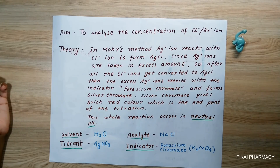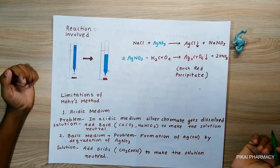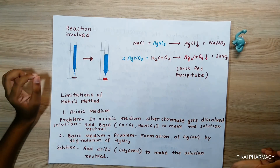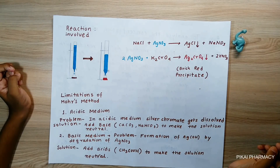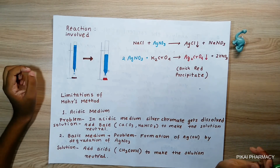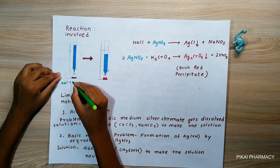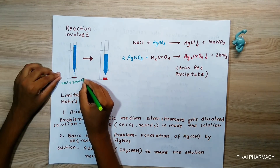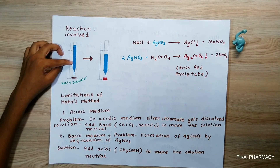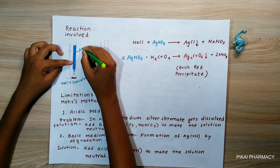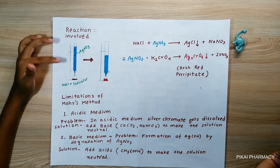Now let's understand the reactions involved in this Mohr method of precipitation titration. I have drawn a burette and a conical flask to help explain the reactions. The conical flask contains a NaCl solution and a few drops of the indicator, potassium chromate, and the burette contains AgNO₃ solution.